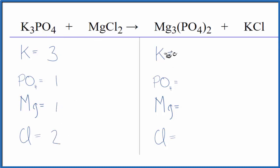On the product side, potassium, we have one of those. We have one phosphate times the two. So that gives us two phosphates, three magnesiums, and then one chlorine.